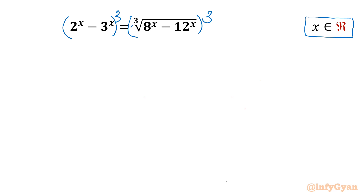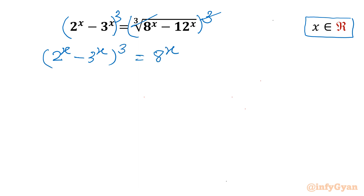We can cancel the cube and cube root. So our equation becomes (2^x minus 3^x)^3 equal to 8^x minus 12^x.